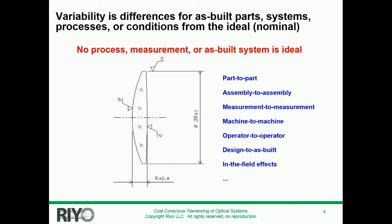Variability is anything that deviates from that ideal — from what you might have on paper — and there are a lot of different reasons for it. Here's a simple drawing with some dimensioning on it. As you can see, it has a plus or minus 4 and a plus or minus 1. Those are, of course, the tolerances that we put on it.